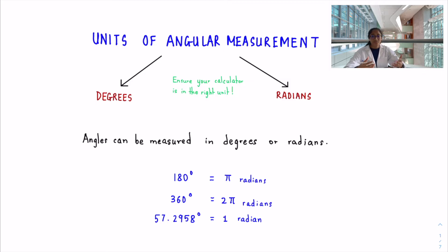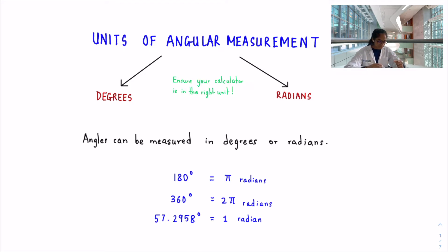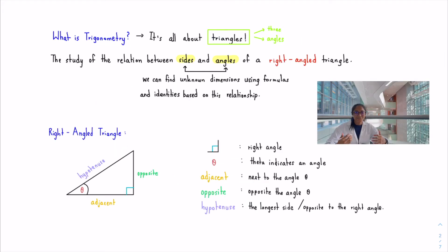Now let's move on to the units of angular measurement. You're familiar with degrees; however, we also need to add radians to our knowledge. One huge thing you need to know is how to switch between degrees and radians on your calculator and be aware of which unit your calculator is in, because it's crucial. The conversion is: 180 degrees equals pi radians, so one radian equals approximately 57.2958 degrees.